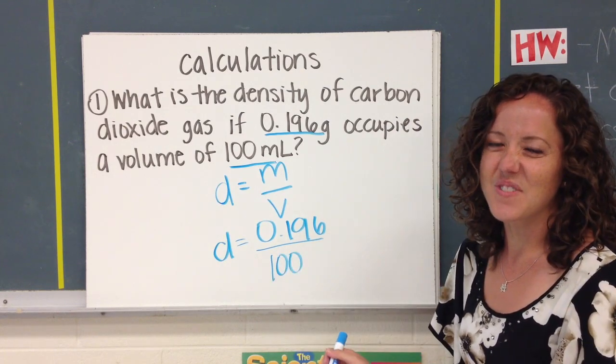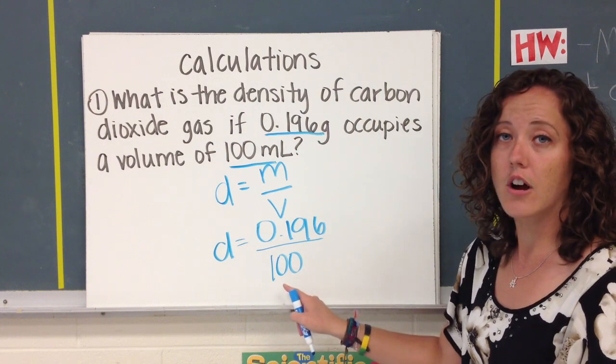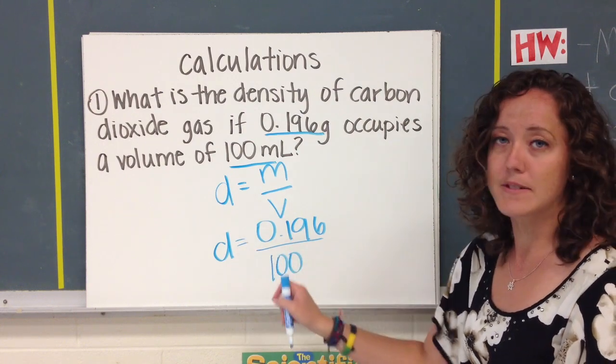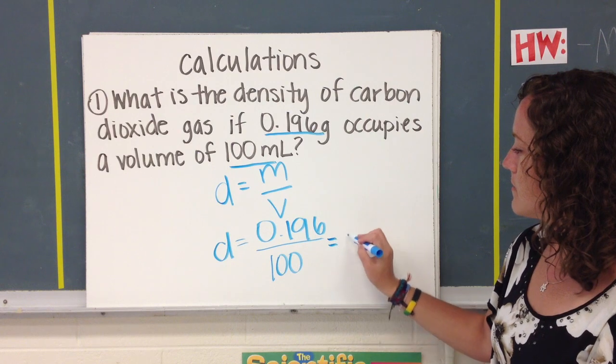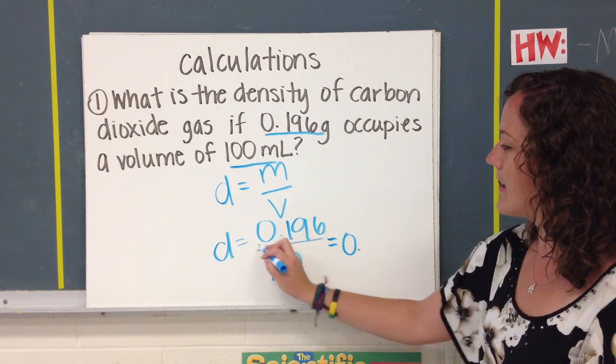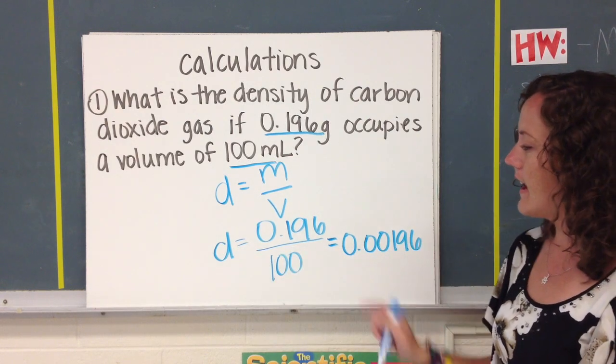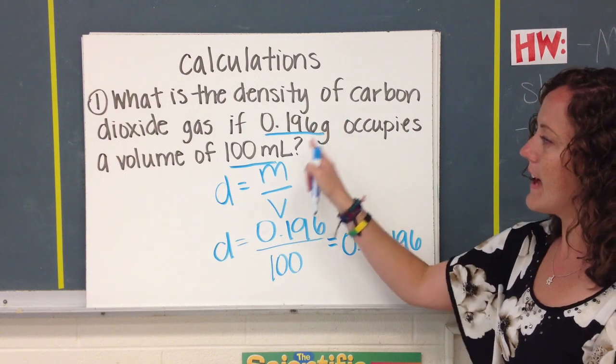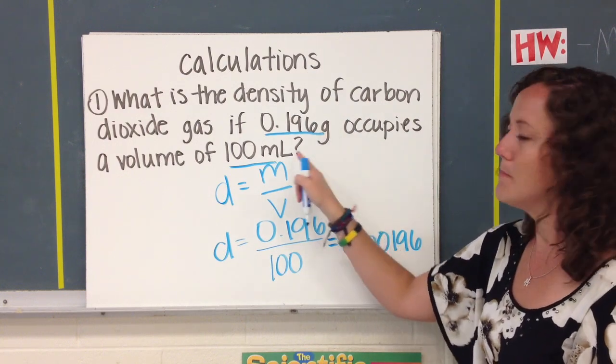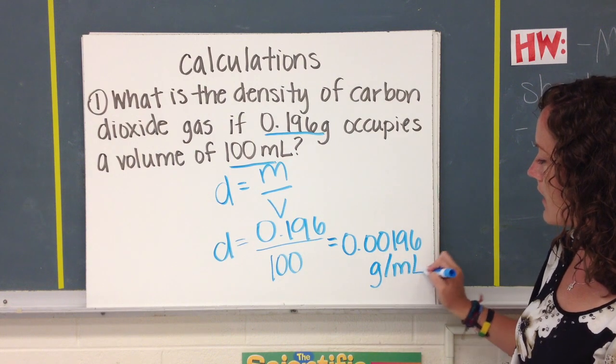You don't really need a calculator for this. If you're dividing by multiples of 10, you can look at how many zeros there are and move the decimal back that amount of spaces. But you can use a calculator to check yourself. So I've moved the decimal back two spaces, and I have 0.00196 as my number. Now I look back at the units I'm given. I'm given grams and milliliters, so then my unit would be grams per milliliter. We've got two more examples to do.